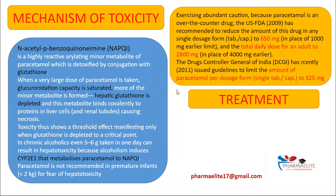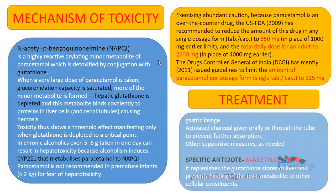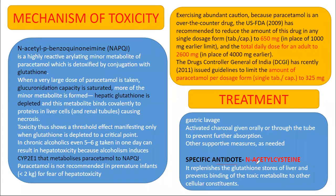Treatment of acute paracetamol poisoning includes gastric lavage, activated charcoal to prevent further absorption, and supportive measures. The most important antidote is N-acetyl cysteine, which replenishes the glutathione stores of the liver and prevents the binding of toxic metabolites to hepatic cellular constituents, thus preventing toxicity.